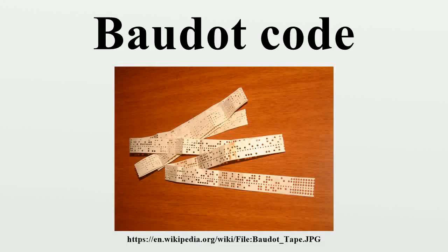The Baudot code, invented by Emile Baudot, is a character set predating EBCDIC and ASCII. It was the predecessor to the International Telegraph Alphabet No. 2, the teleprinter code in use until the advent of ASCII. Each character in the alphabet is represented by a series of bits sent over a communication channel such as a telegraph wire or a radio signal. The symbol rate measurement is known as Baud, and is derived from the same name.